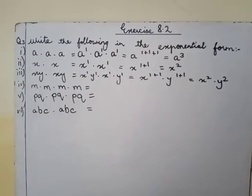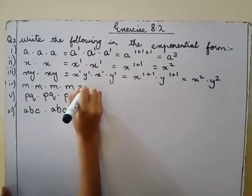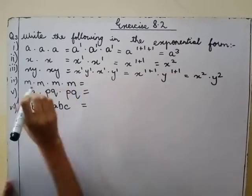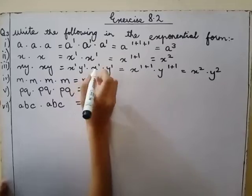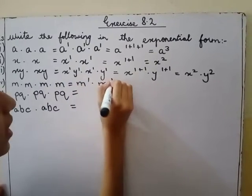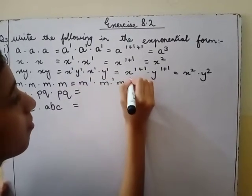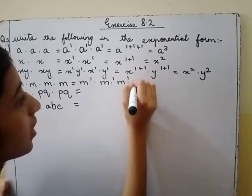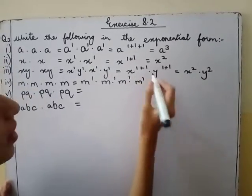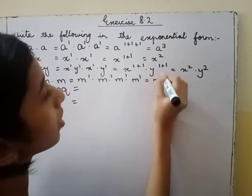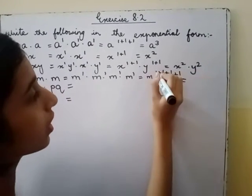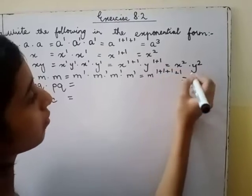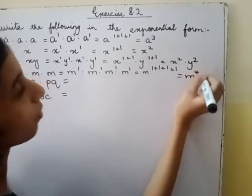Now the fourth part is m point m point m point m. So m one, m one, m one, m one is equals to m one plus one plus one plus one is equals to one, two, three, four, m four.